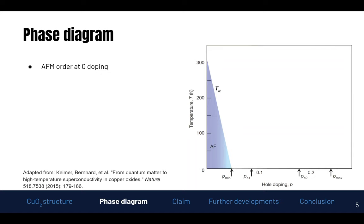Thus we expect an antiferromagnetic insulating phase at zero doping, and if we look at the phase diagram this is exactly what we see. Below a certain temperature, the Néel temperature T_N, we indeed have an antiferromagnetic phase. If we either increase the temperature or increase the doping, we expect this antiferromagnetic phase to reduce in relative strength — for temperature it's due to thermal fluctuations, and for increased doping it's because we get more defects, leading to less strong coupling.